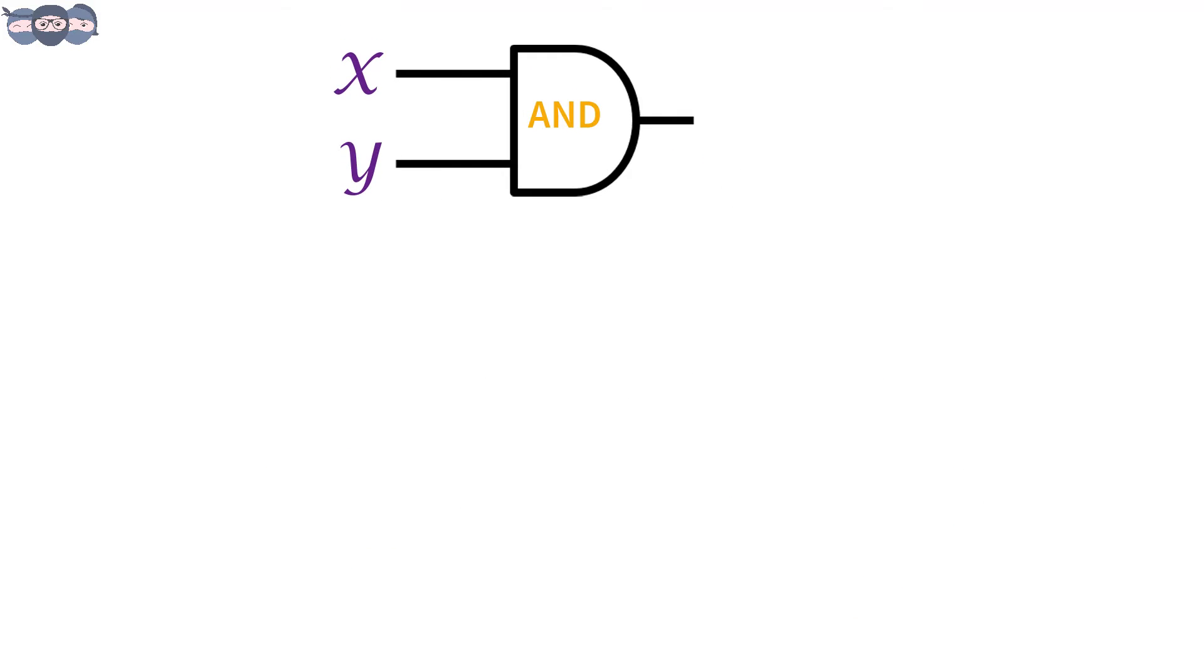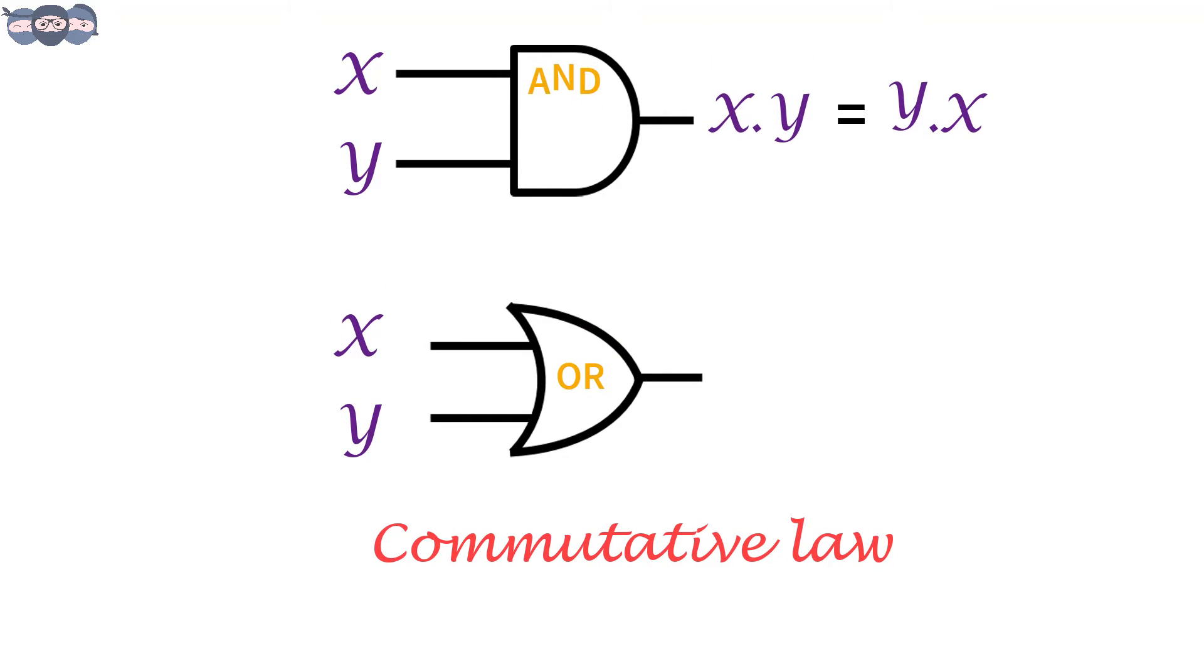Consider X and Y as two inputs for AND gate. The output can be written as X and Y, or we can say Y and X. Both are equivalent. The same is true for an OR operation. The output is X or Y or Y or X. This is called commutative law.